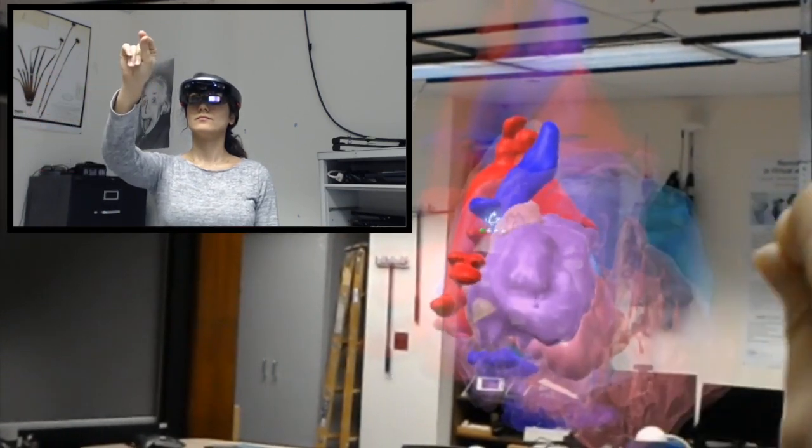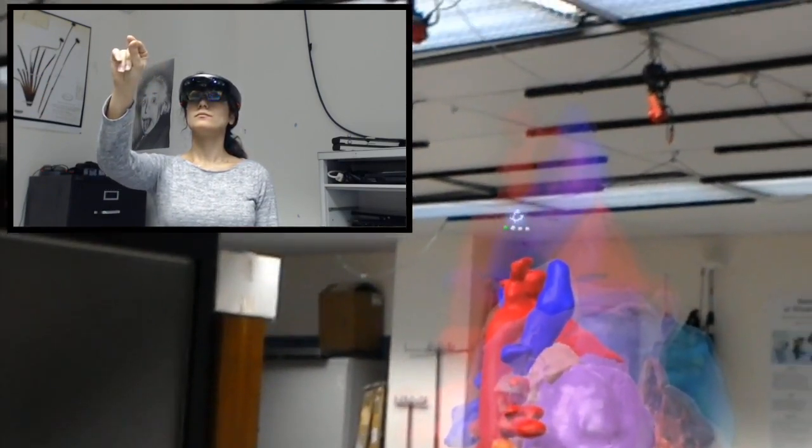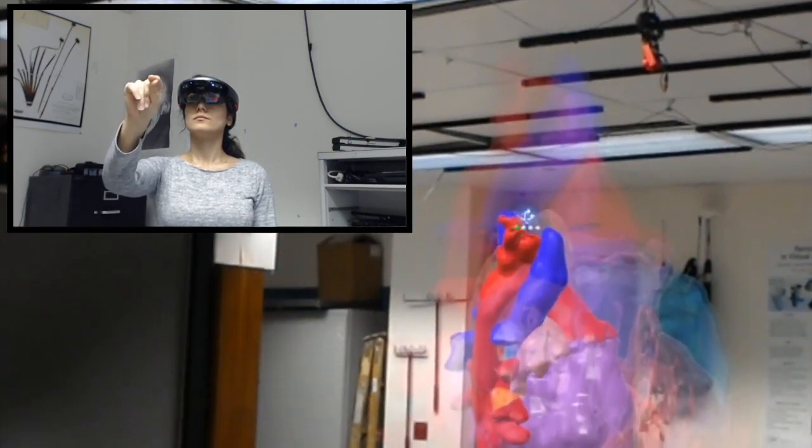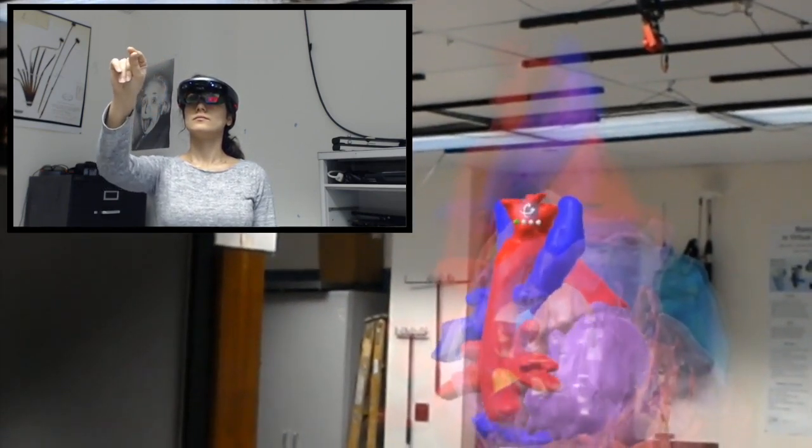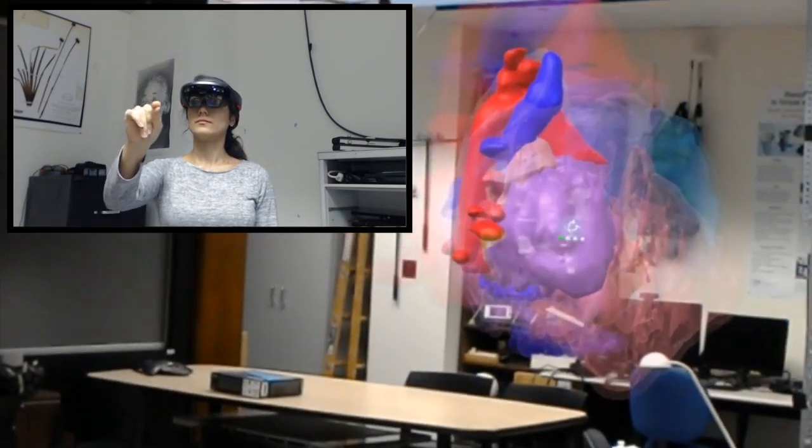Hand motion right or left of the model will rotate the model about a roughly vertical axis, while motion up or down will rotate the model about a roughly horizontal axis. To rotate about an axis from the model center to the user's head, the user says Z axis and then moves their hand right or up for clockwise rotation, or left or down for counterclockwise rotation.